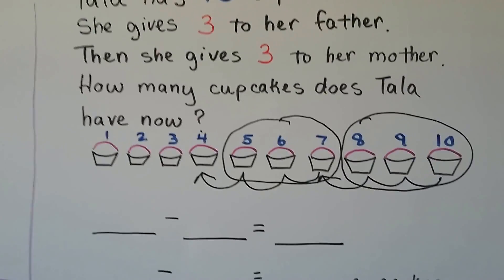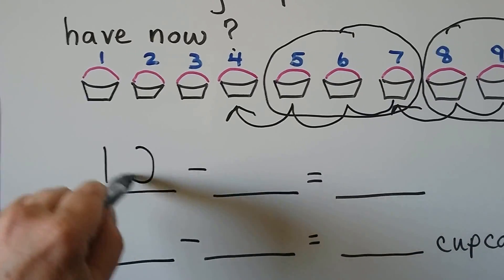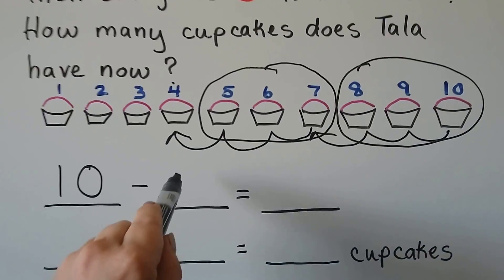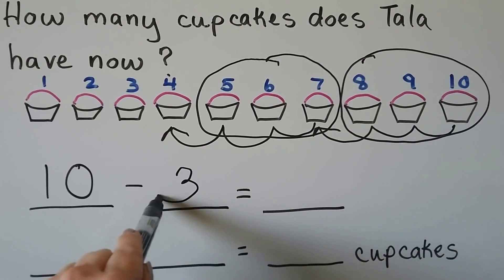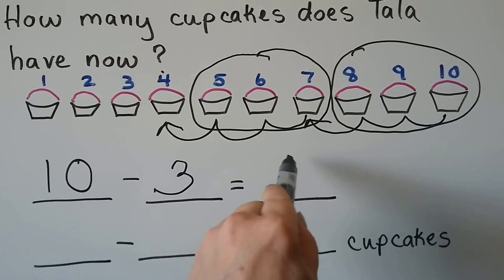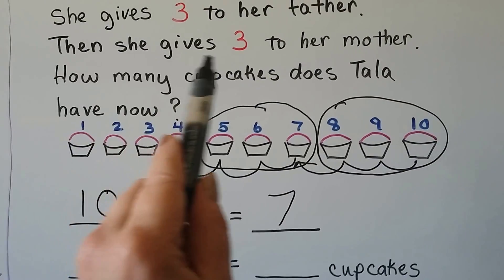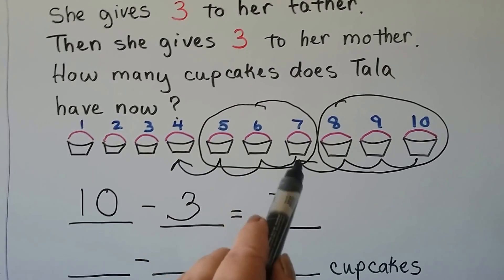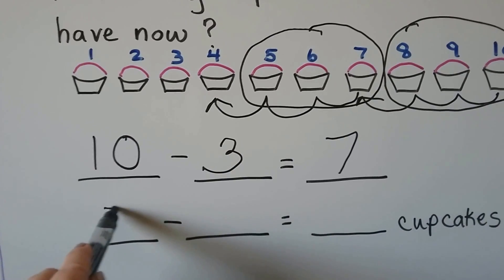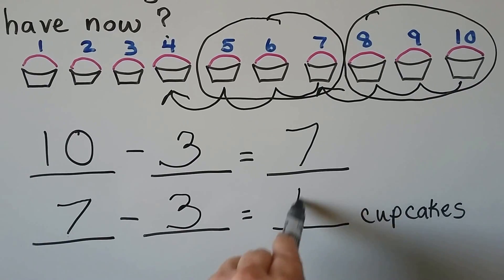We can write the subtraction sentences. She had 10 cupcakes. She gave 3 to her father: 10, 9, 8, 7 — now she has 7 cupcakes. Then she gives 3 to her mother: 6, 5, 4. So we start with 7, take away the 3 she gave her mother, and now she has 4 cupcakes.